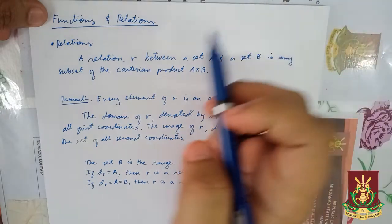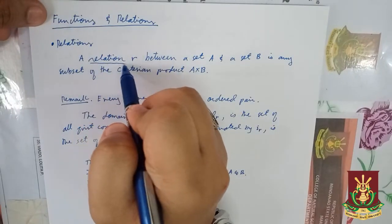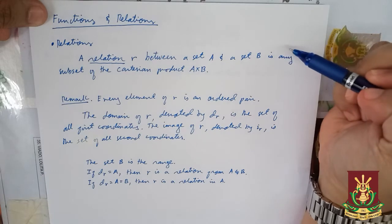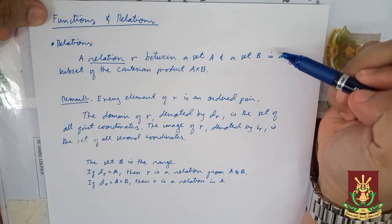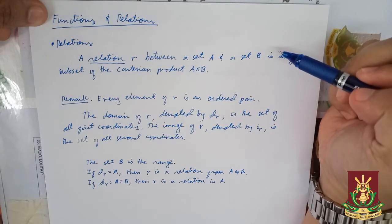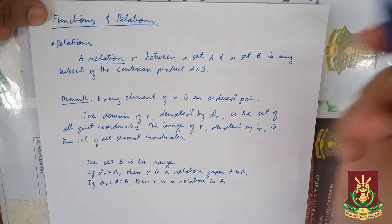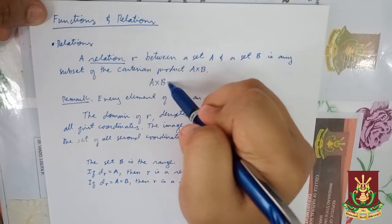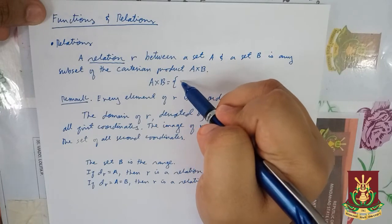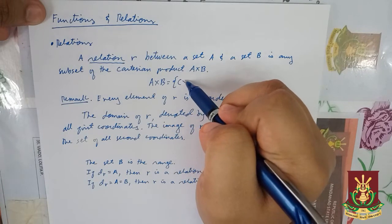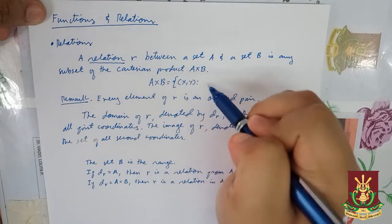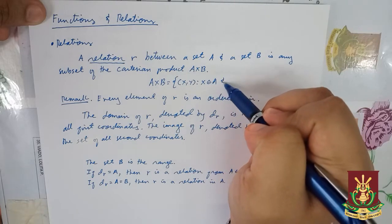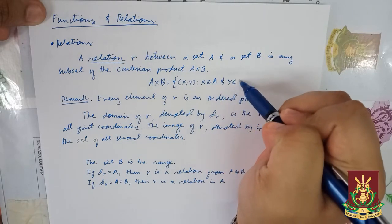To start, we will define a relation R between two sets A and B to be any subset of the Cartesian product A × B. Recall that by definition, A × B is equal to the set of all ordered pairs (X, Y) such that X is in A and Y is in B.